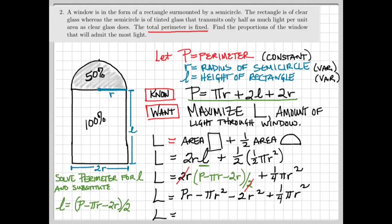Probably should do a little bit of simplification first. Substituting our computed function for L into the formula for light gives us 2R times the quantity (P - πR - 2R)/2, plus 1/4 πR². Before going ahead and optimizing this function, let's do some algebraic simplification.